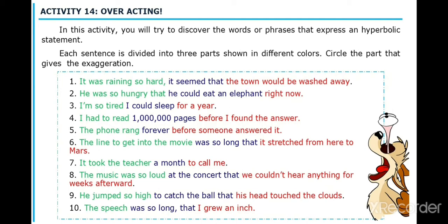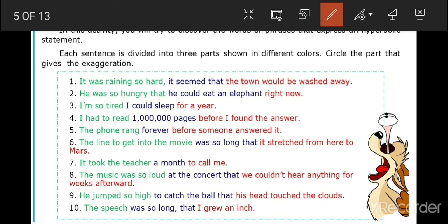In your printed learning material, since it was only photographed or photocopied, there are no colors there. Here now you can see the different colors: green, blue, and red. Number one: It was raining so hard it seemed that the town would be washed away. Which color do you think shows exaggeration? Is it the green, the blue, or the red? Right, it's the red. 'The town would be washed away' shows an exaggeration. It's an overacting, that is hyperbole.